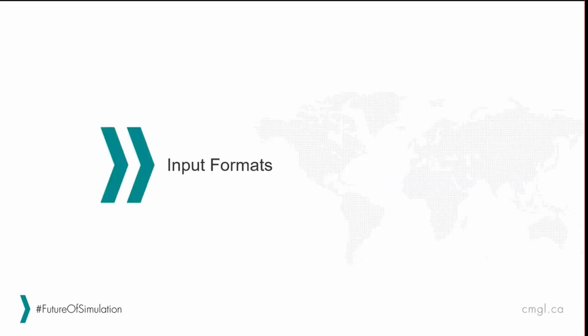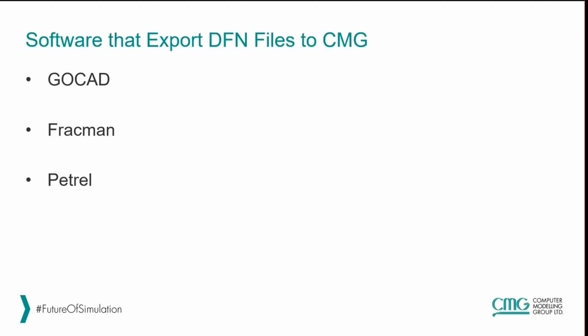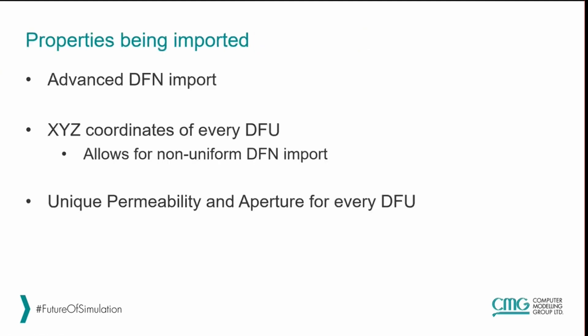Next we'll look at the different formats we can use to import these fracture networks. There are a variety of softwares able to export DFN files to CMG, including GOCAD, FRACMAN, and PETREL. There is an advanced DFN import available in Builder where we import the X, Y, and Z coordinates associated with each DFU. This allows for non-uniform DFN imports where each DFU can have its own coordinates as well as unique permeability and aperture, allowing different properties to be associated with different fractures.